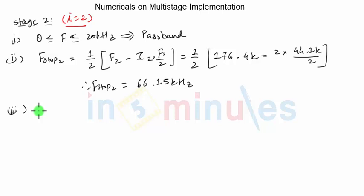Step 3 was about calculating delta F which is the normalized transition width. Delta F2 in this case will become 66.15 K which is new F stop minus Fp will always remain same that is 20 K and this time it will be divided by output sampling frequency of this stage which will be 176.4 K. So if you calculate this it will be 0.2616.